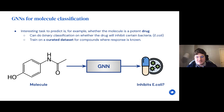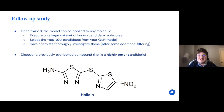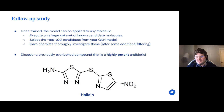Once you've trained the GNN to predict a response to E. coli you can apply it to any molecule — not just ones in your training set. You can take a large dataset of known candidate drug molecules, pick the top 100 candidates that your GNN model gives you. The graph net will output a probability that the molecule will inhibit E. coli, so you take the top 100 probabilities and send those candidates to chemists for further analysis and additional filtering.